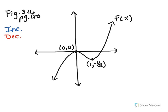Starting from the left, take a point here and think about the tangent line — is it a positive or negative slope? It's positive. Pick another point farther to the right — still positive. In fact, the slope is positive all the way up to the maximum, so I'm going to highlight this entire portion in blue. That's one increasing interval.